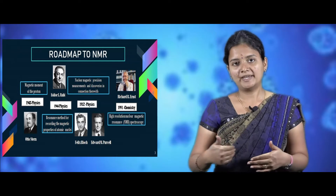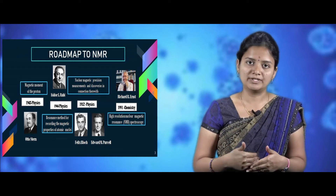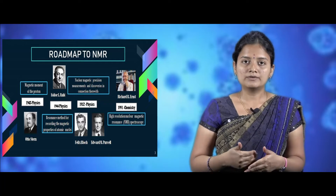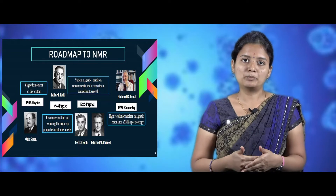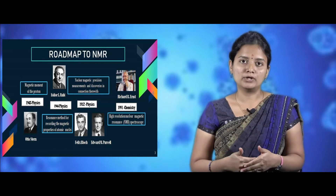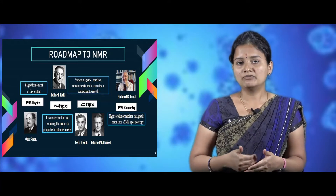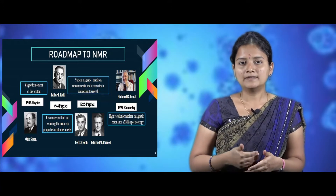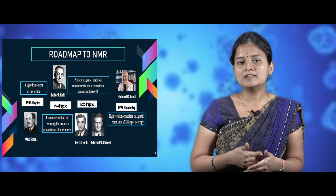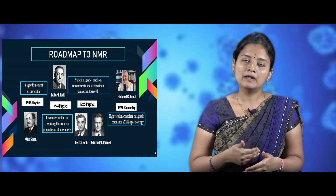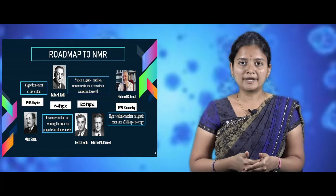The emergence of NMR started in the year 1943. Octostone was the first person who studied the magnetic properties of atoms or protons, and he was awarded the Nobel Prize in the year 1943 in the area of physics. Another person, Isidore, studied the resonance method to determine the magnetic properties of atomic molecules, and he was also awarded the Nobel Prize in the year 1944 in physics.